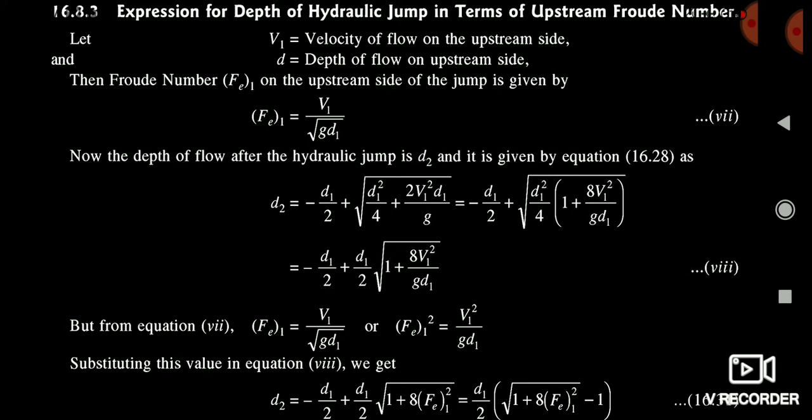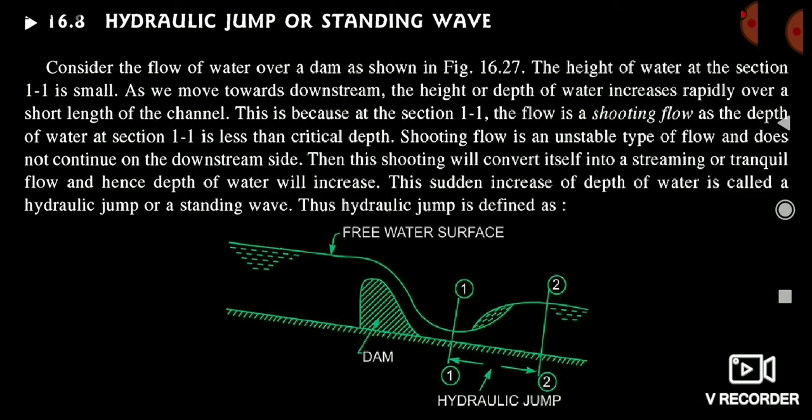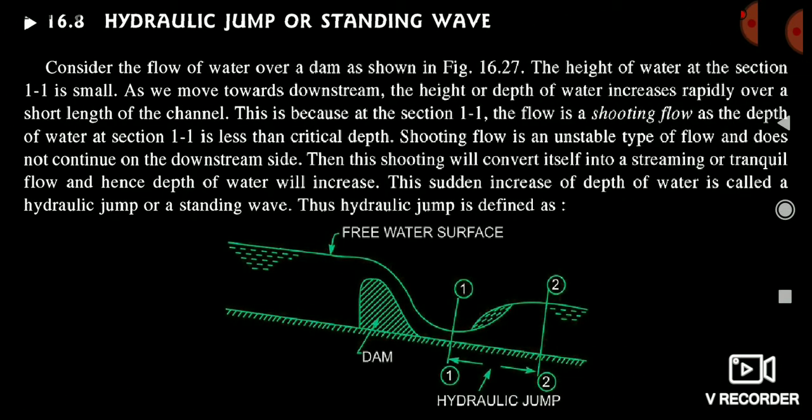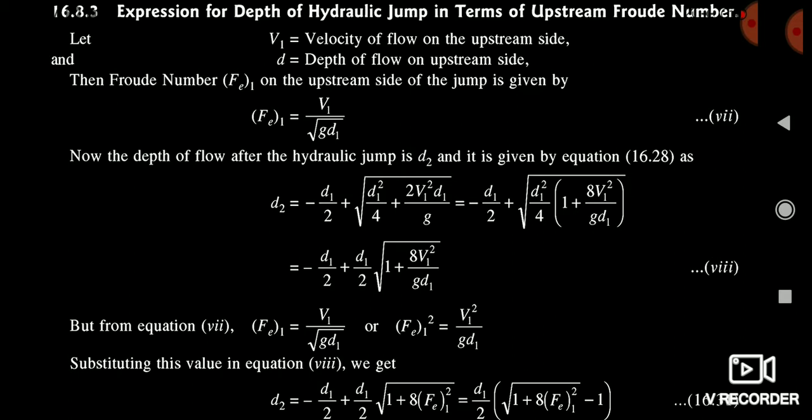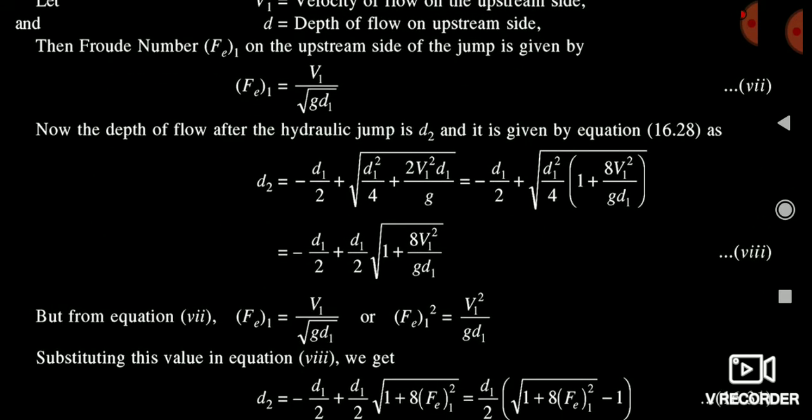You have to remember this Froude number formula. You have to remember this to solve the questions. After this you can calculate the depth of flow. D1 and D2 are the depths of flow — D1 is the depth of flow before the hydraulic jump and D2 is the depth of flow after the hydraulic jump. You will see the calculations here, and after equating both equations, we have got the final result.